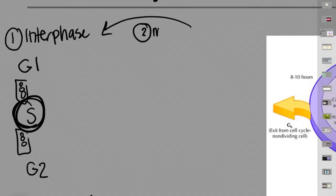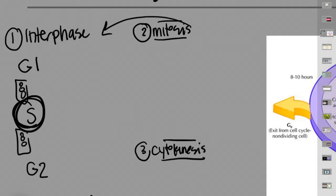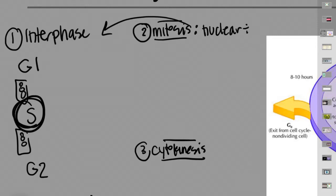The M phase consists of two important events: mitosis and cytokinesis. In eukaryotic cells, the collection of all the DNA — all the chromosomes — is called the genome. Every cell needs an exact copy of the genome, so what eukaryotic cells do is first divide the nucleus before the cell even divides. That's what mitosis is — nuclear division. Only after nuclear division do you get cell division, which is division of the cytoplasm — that's cytokinesis.